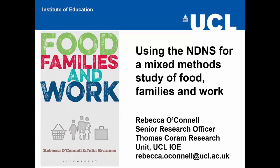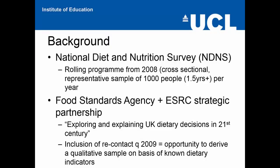I'm going to highlight some of the ways in which we used the survey as a sampling frame for a qualitative study, using the nutritional data to develop an index of diet quality, and by use of the contextual or para data to examine patterns of family meals. The NDNS was established in 1992, but from 2008 it became a continuous cross-sectional survey designed to collect detailed quantitative information through three or four-day diet diaries on food consumption, nutrient intake, and nutritional status of the general population aged one and a half years and over, living in private households in the UK, covering a representative sample of around a thousand people per year.